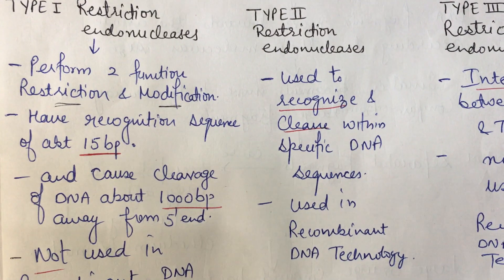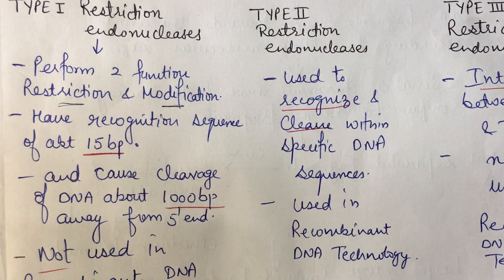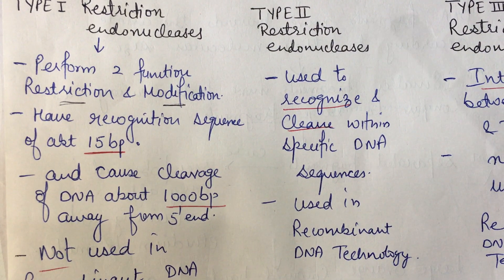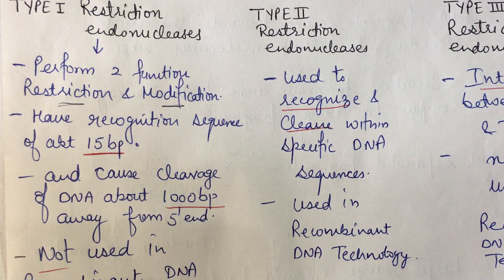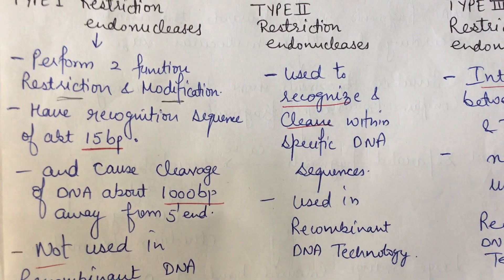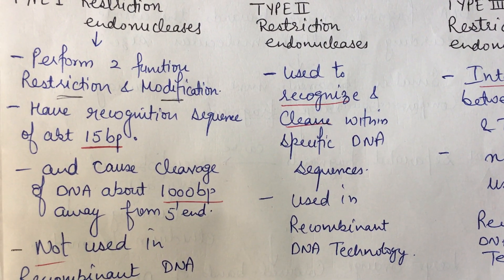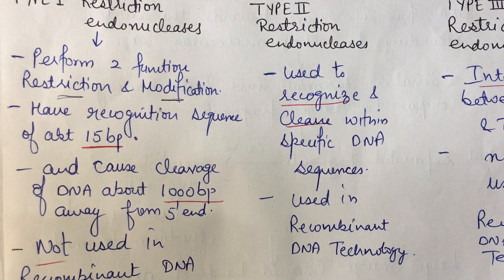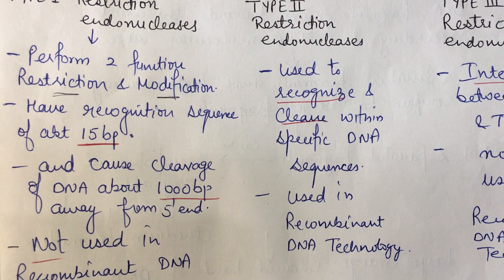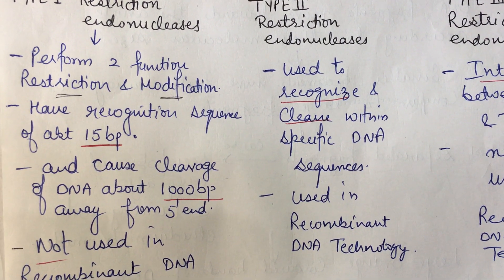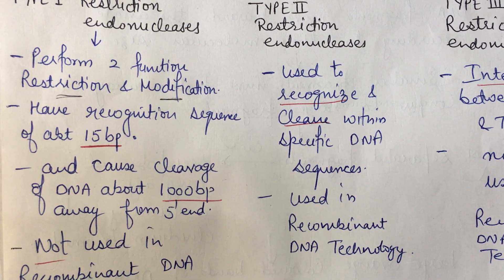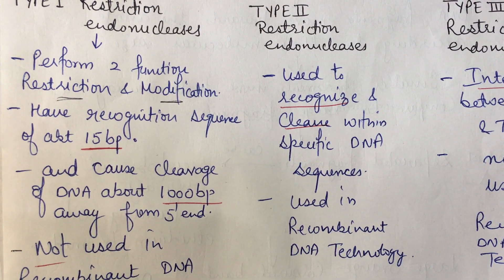Type 2 restriction endonuclease enzymes recognize and cleave within specific DNA sequences — they identify the specific DNA sequence and then cleave within that DNA. Type 2 enzymes are used in recombinant DNA technology.